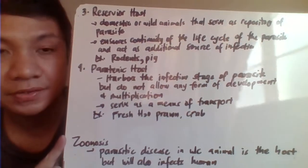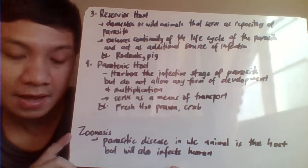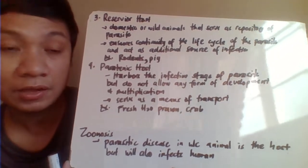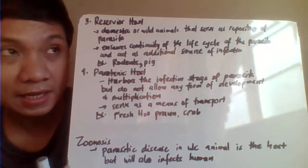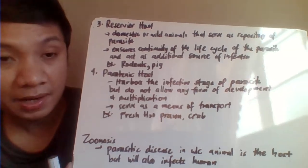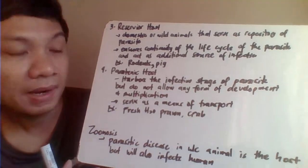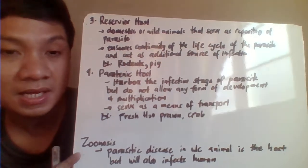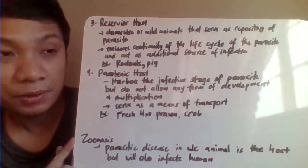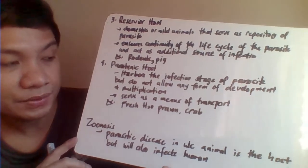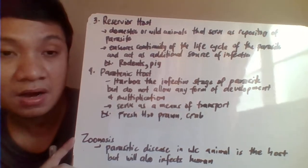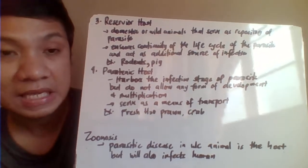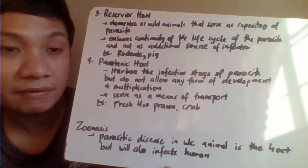The reservoir host is an animal host that helps maintain the continuity of the parasite's life cycle — it is the repository of the parasite. The paratenic host, on the other hand, harbors the infective stage of the parasite but does not allow developmental multiplication. It serves only as a means of passive transfer of the parasite, without the parasite undergoing any developmental transformation within it.